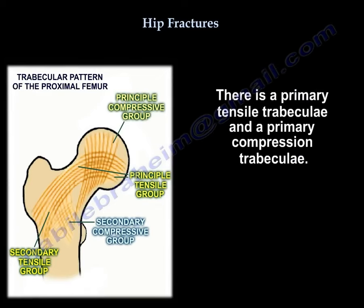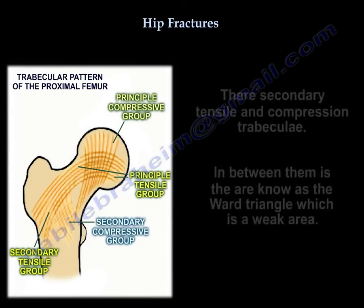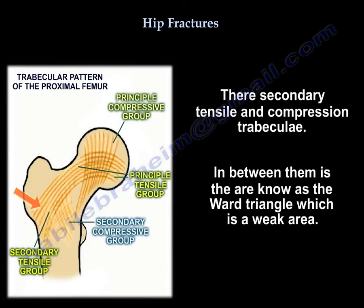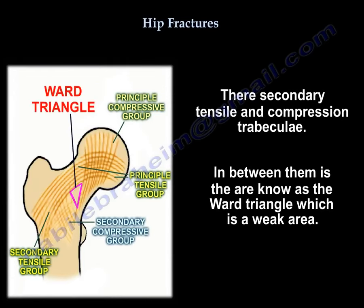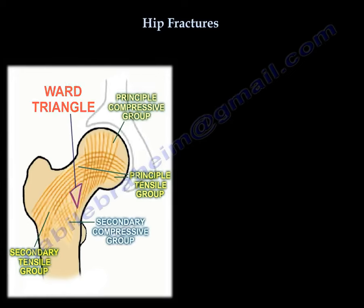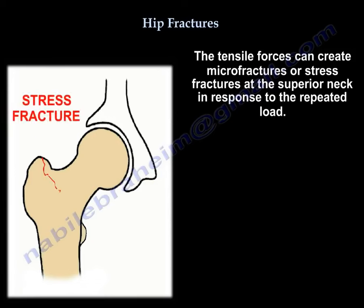There is a primary tensile trabeculi and a primary compression trabeculi, as well as secondary tensile and compression trabeculi. In between them lies the Ward triangle, which is a weak area. The tensile forces can create micro-fractures or stress fractures at the superior neck in response to repeated load.